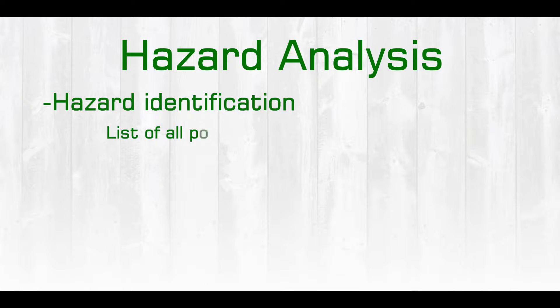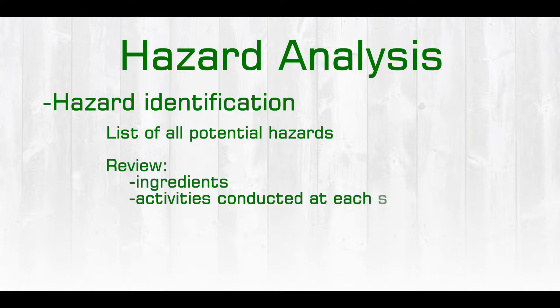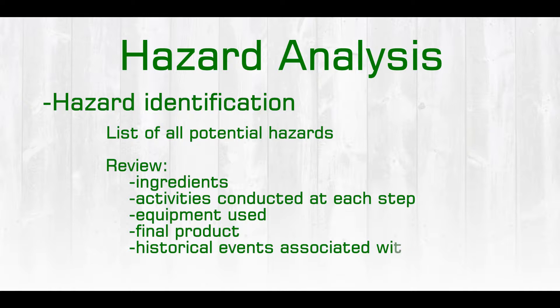In the hazard analysis, there are two steps that we need to take. The first is the hazard identification, which can basically be thought of as a brainstorming session. Through this hazard identification, we will develop a list of all potential hazards that may be associated with that food. We would then review everything from the ingredients, the activities conducted at each step of processing, the equipment used, the final product itself, as well as any historical events associated with that particular product.